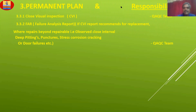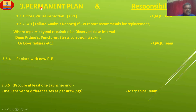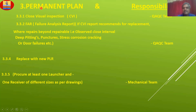Permanent Plan and Responsibility. Close Use Inspection (CVI) — inspection to be done by the inspection team. FAIR: Failure Analysis Report. If the CVI report recommends replacement, they replace beyond repairable.